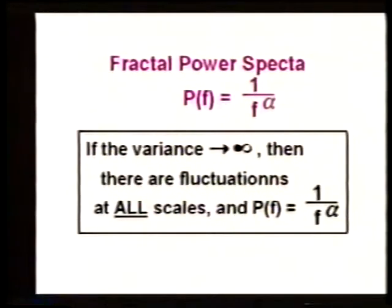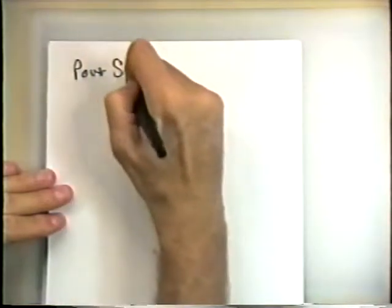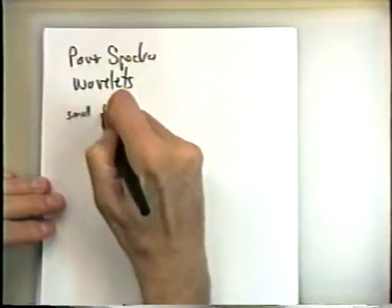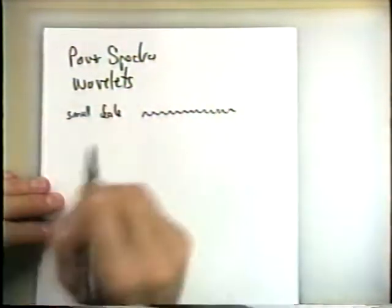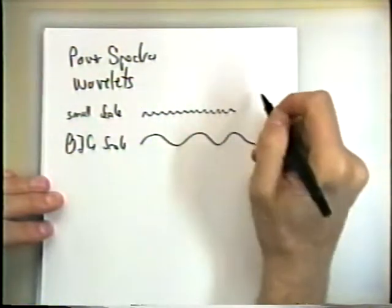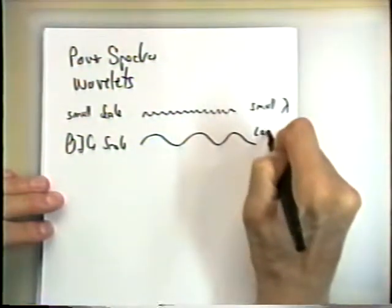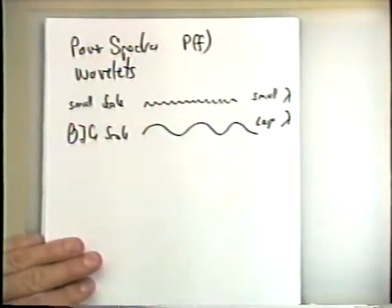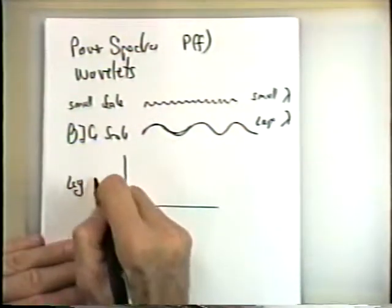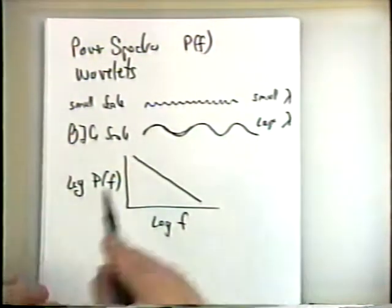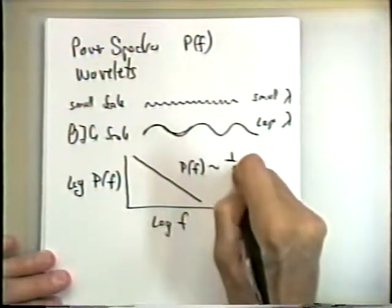Another way fractals come up is in power spectra. If we look at power spectra and wavelets, we can look at small-scale features by looking at components with small wavelengths, and big-scale features by looking at long wavelengths. How the power spectrum — power as a function of frequency — depends on frequency is, in essence, a fractal measure. Very often if we plot log of the power at a given frequency versus log of the frequency, we see a straight line — a characteristic power-law scaling — where the power depends on 1 over the frequency to some power.